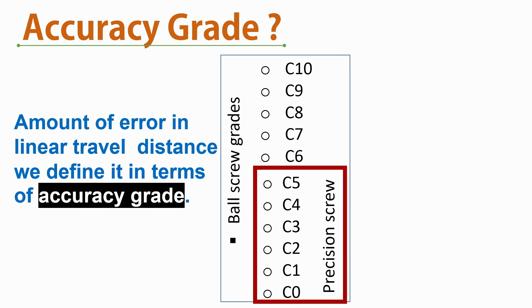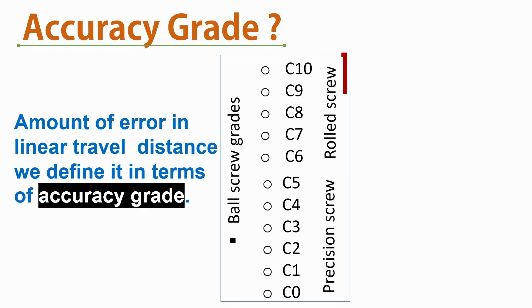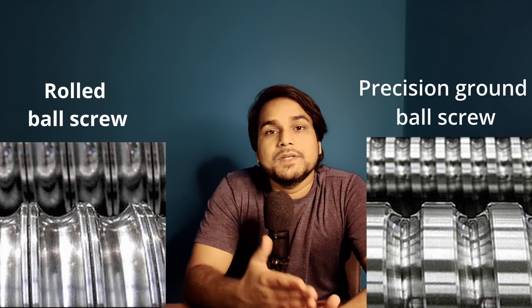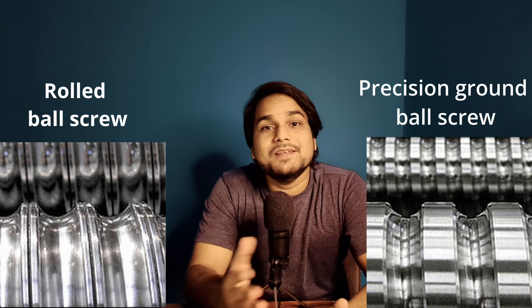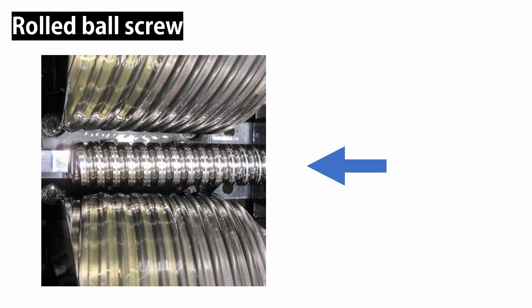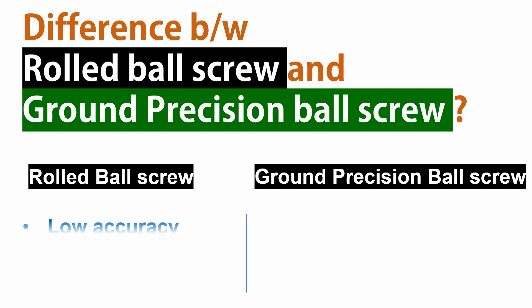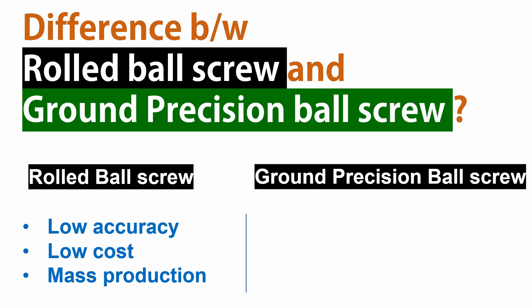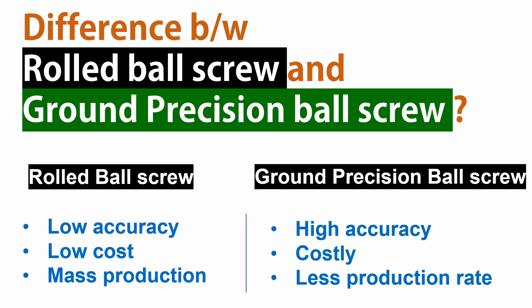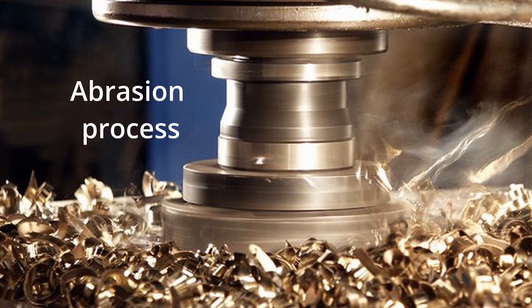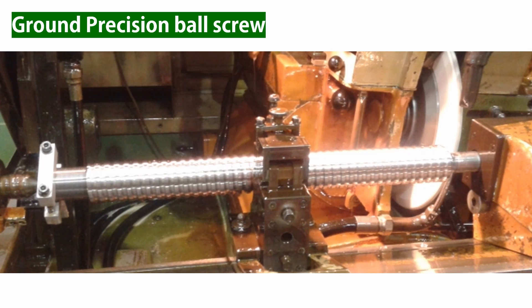From C0 to C5, the grade refers to precision ground ball screws. Above C5, rolled ball screw grades begin. The main difference comes from the manufacturing process. Rolled ball screw threads are created by pushing a stock bar through rotating tools and dies in a single cold deformation operation, which is easily automated for mass production — making rolled ball screws cheaper, but with lower accuracy. Ground ball screws are fabricated through an abrasion process, which cannot be automated; their accuracy is high, backlash is minimum, but they are costly.